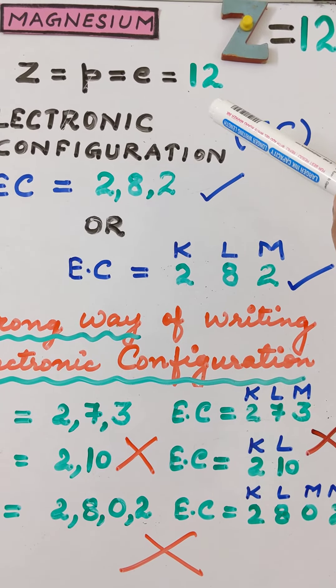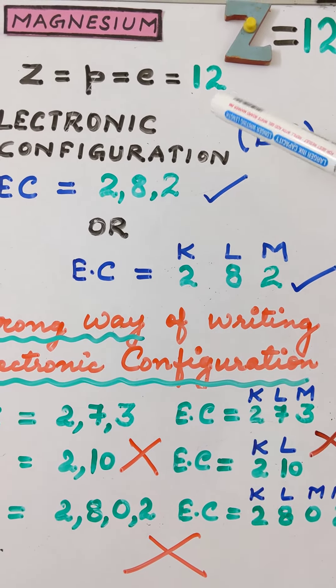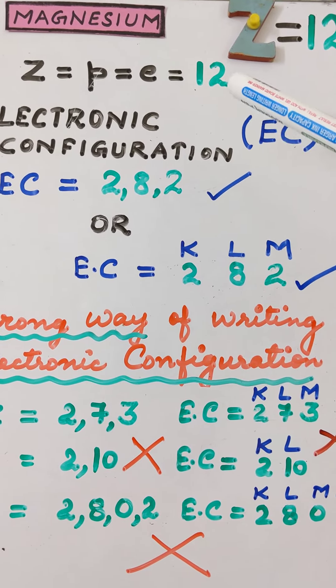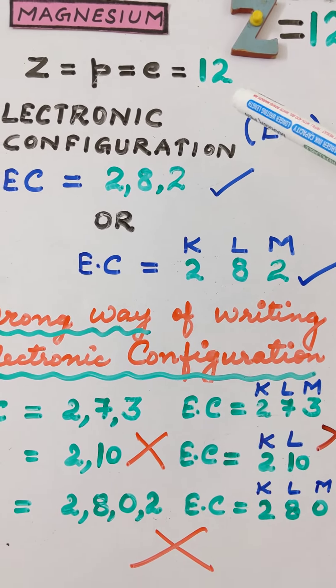Let us try to understand the electronic configuration for the 12th element, that is magnesium. Magnesium has an atomic number Z of 12, which also gives us information about the number of electrons present in magnesium. So electrons present in magnesium are 12.